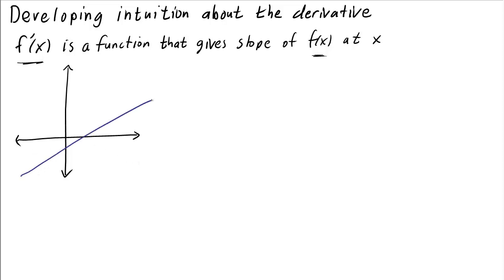Let's think about what happens when f is a linear function. The slope of the tangent line does not change as we change the point at which we evaluate it — the tangent line is always the same as the function f since f is linear. So let's say I evaluate the derivative at some point x where the slope is one half. The value of the derivative must be one half everywhere along this line.